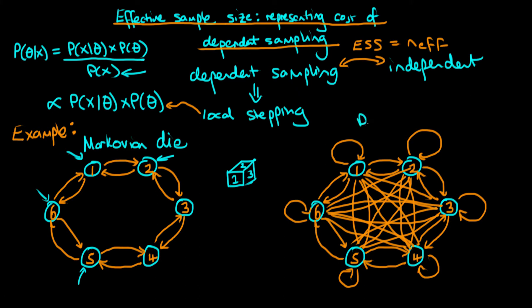The more traditional die that everyone is used to is the situation where you can get from any number to any other number with equal probability. In other words, from a one you can throw a two, three, four, five, six, or indeed a one again, and all those outcomes have the same probability.